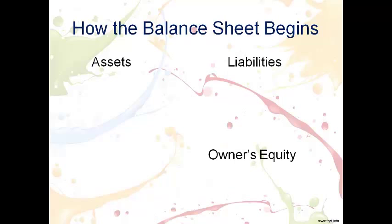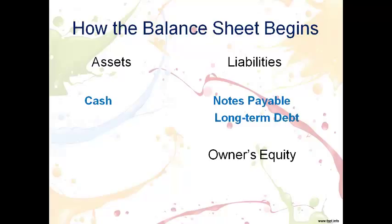The balance sheet begins when the company gets cash to finance the business. Cash comes from either borrowing money, which is called notes payable or long-term debt, or from investors, which is called common stock. The balance sheet begins with an increase to the asset cash and an increase in either one or both of a liability or common stock.